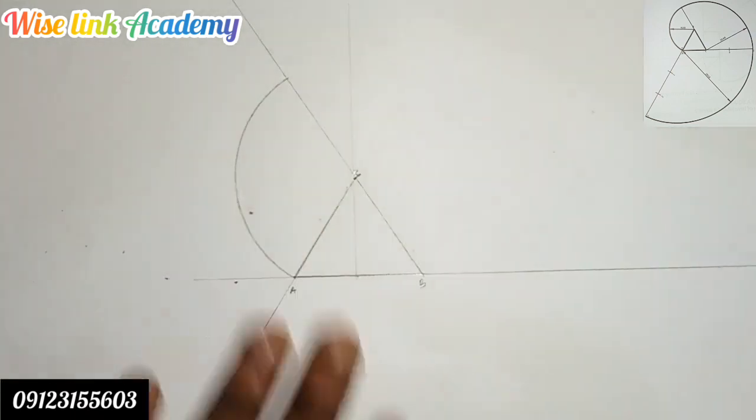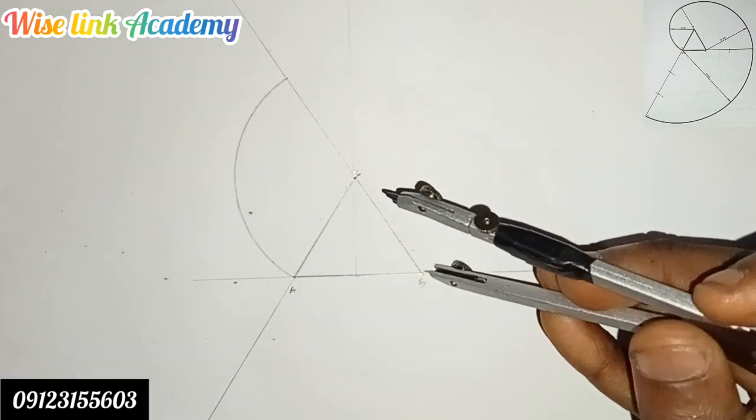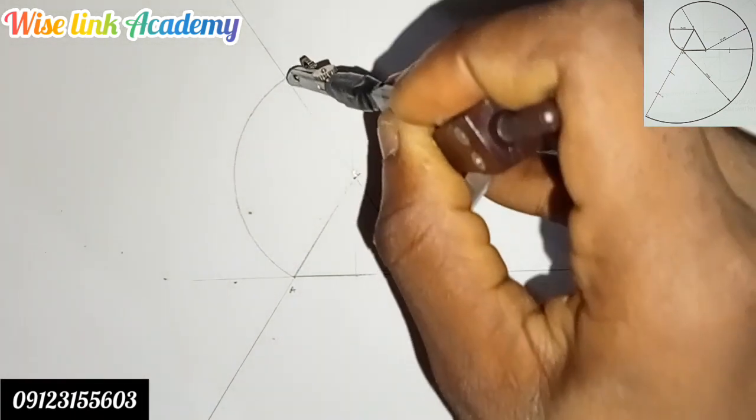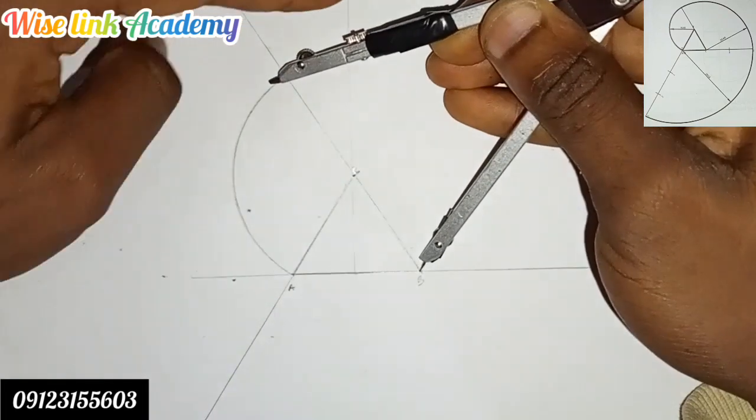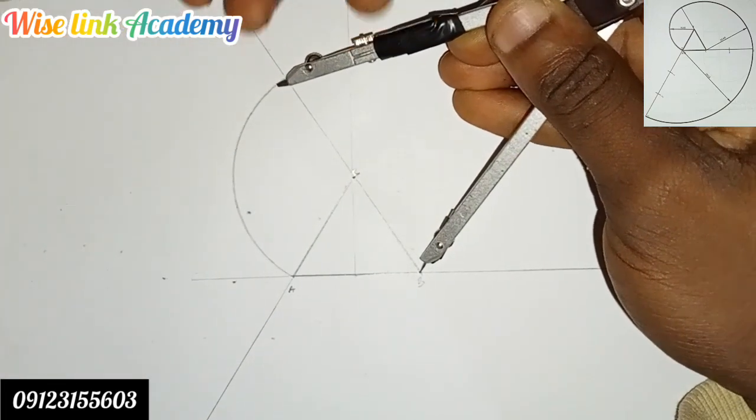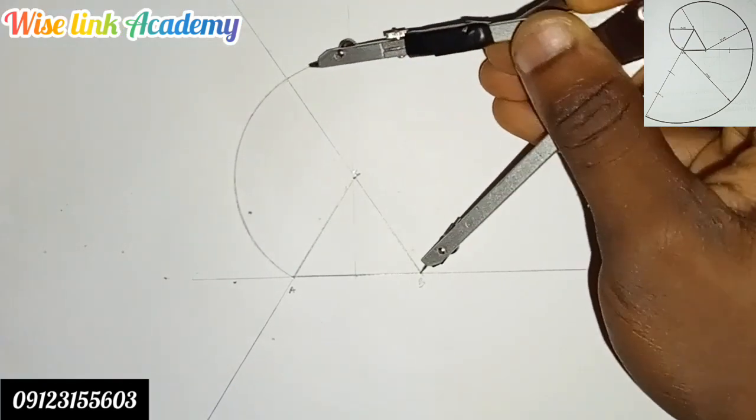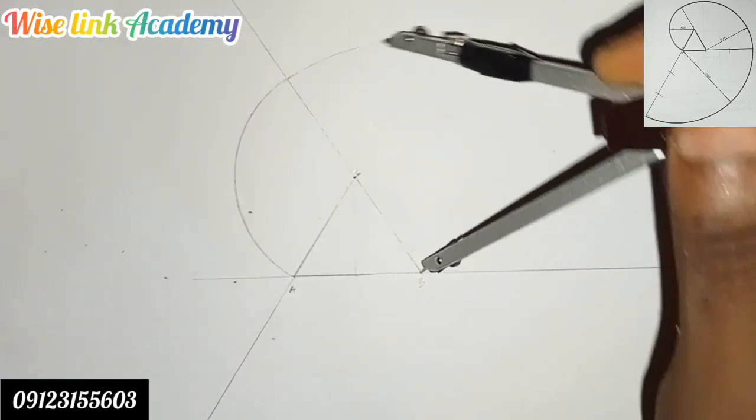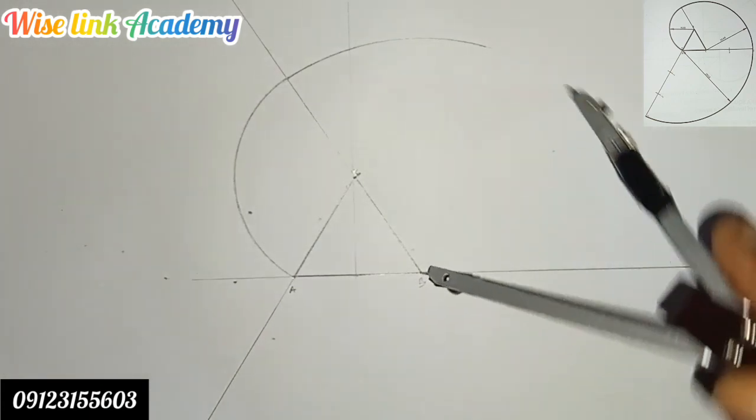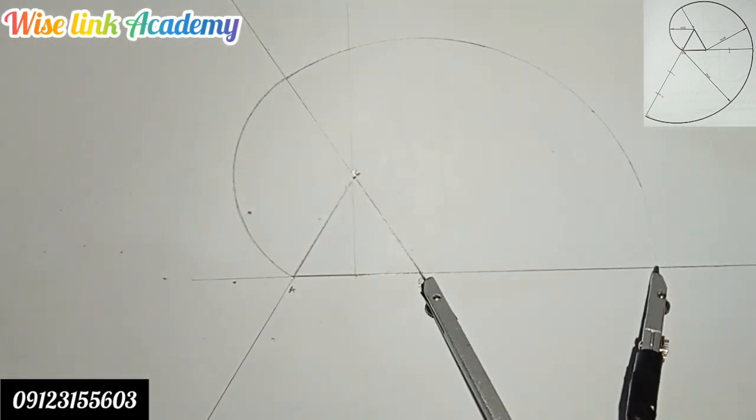Next, from point B, extend it to the point where that first arc is drawn. On this point, take it again to this point.